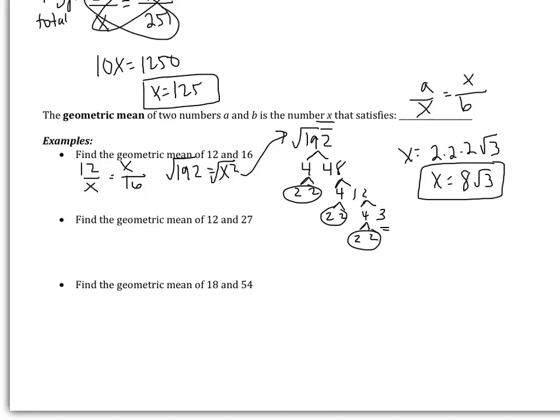Let's try one more together. Find the geometric mean of 12 and 27. So x is used twice, I then have 12 and 27. Cross products, I get x squared equals 12 multiplied by 27 is 324.